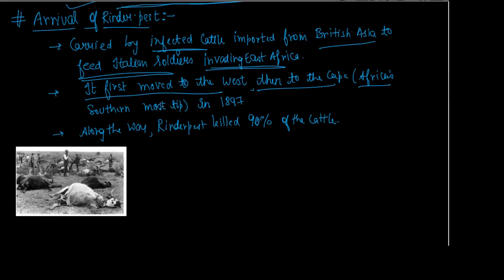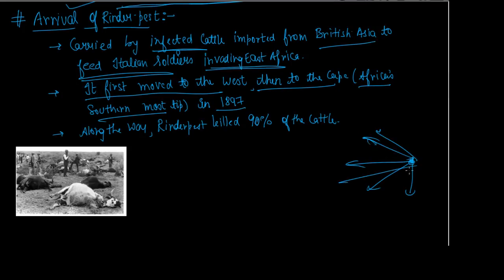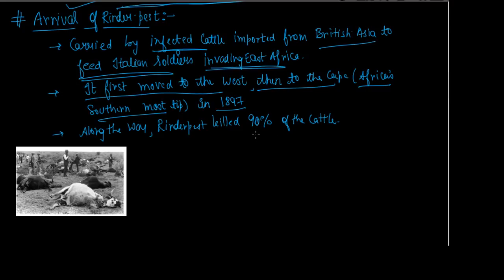From its starting point it spread westward, then southward, moving across Africa. Along the way, as the rinderpest virus spread across Africa from East to West and Southern Africa, it killed 90% of the cattle on its path.